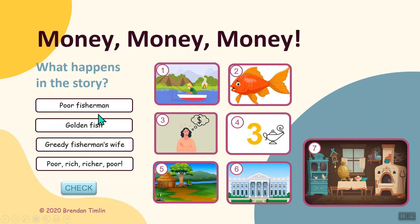What happens in the story? We have the fisherman, the poor fisherman, the golden fish, and the greedy wife. The fisherman catches a golden fish and puts it back, and the fish will give him three wishes. The greedy wife wants more and more and more.